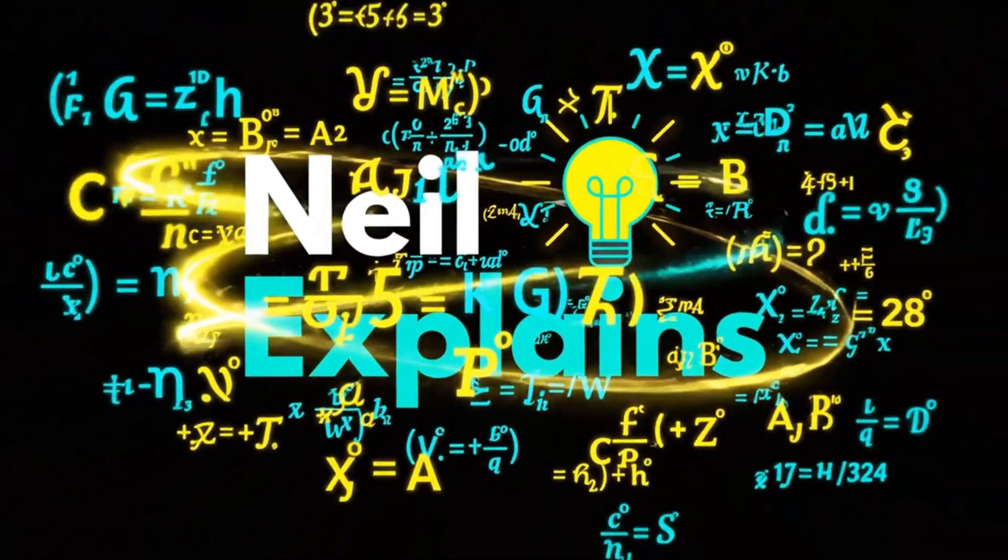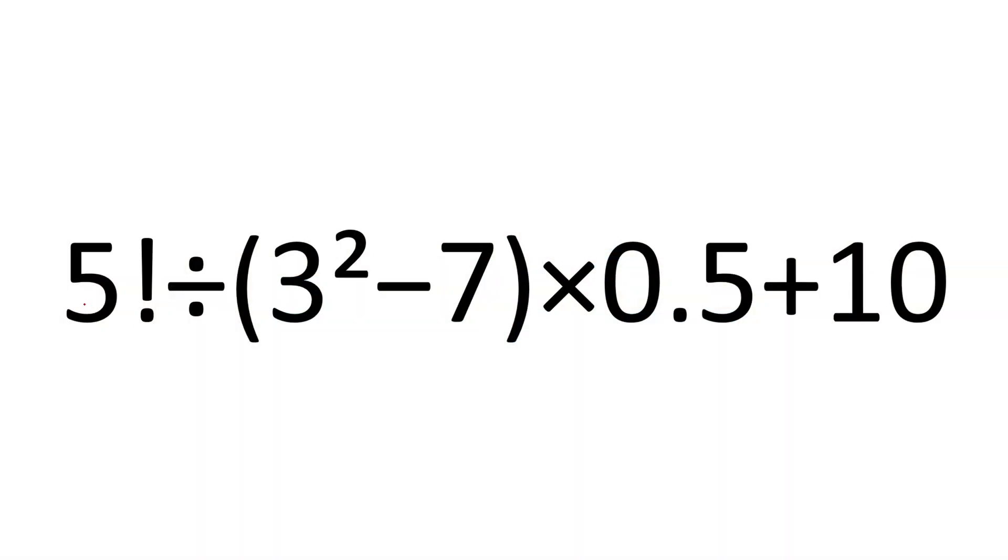Hello everyone and welcome back to NeelExplains where we have this math question. Try to solve by your own within 10 seconds. Our question is 5 factorial divided by parenthesis 3 square minus 7 parenthesis close times 0.5 plus 10. You have 10 seconds to go.